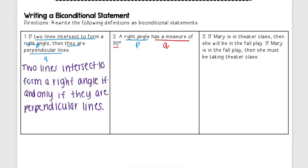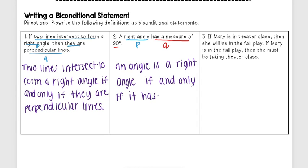To write that as a biconditional, I can say: an angle is a right angle if and only if it has a measure of 90 degrees.